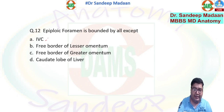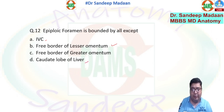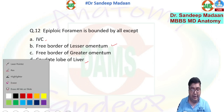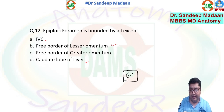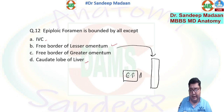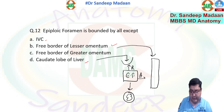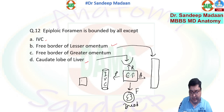The epiploic foramen is bounded by all except IVC — yes, IVC is present below in the floor. The free border of the lesser omentum forms the anterior wall. The caudate lobe of the liver is present above as the roof. The duodenum — first part of the duodenum — is below, making the floor. The IVC is posteriorly present along with the T12 vertebra and the right suprarenal gland.